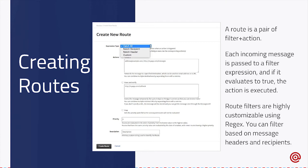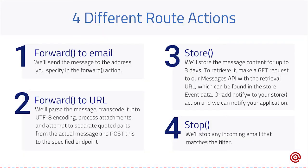There are several different actions you can use with Mailgun, such as forwarding to another email address, forwarding to a URL or application itself, storing the message, or just plain stopping it. Forwarding to another email address is just as basic as it sounds — we catch the message and forward it on to the recipient email address that you specify.